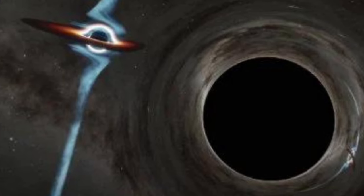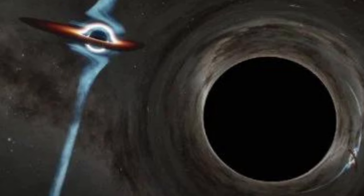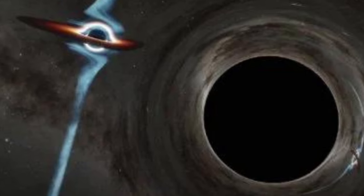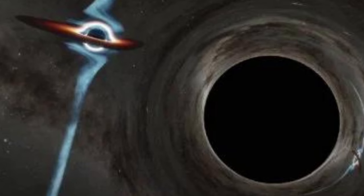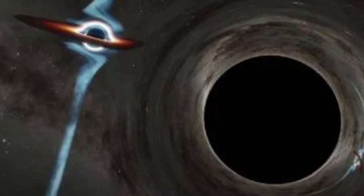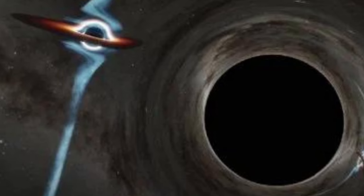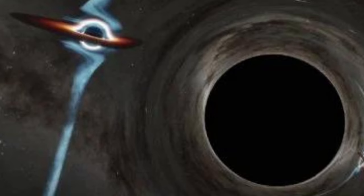The object in question is a quasar, named PKS 2131-021. These are galaxies in which the galactic nucleus is active, that is, the supermassive black hole is accreting matter at a furious rate, blazing with the heat generated by friction and gravity in the material roiling around the nucleus.